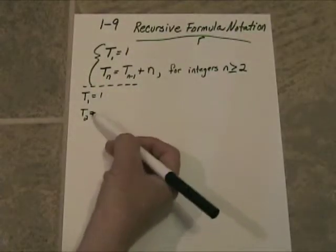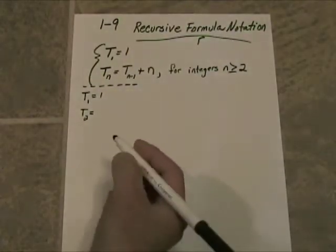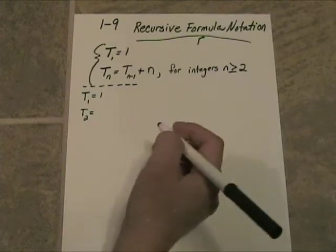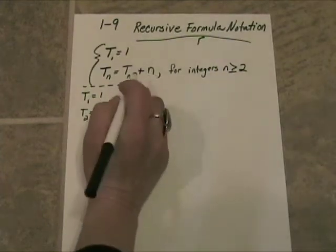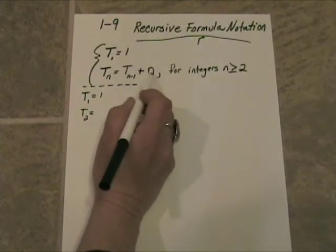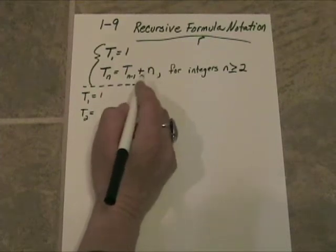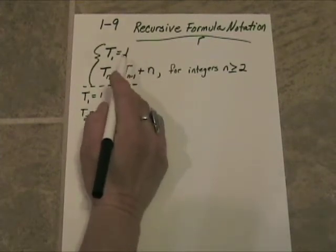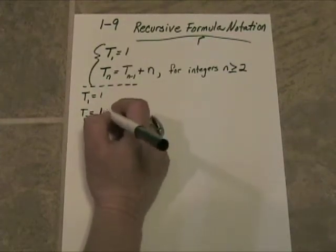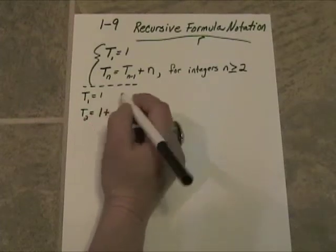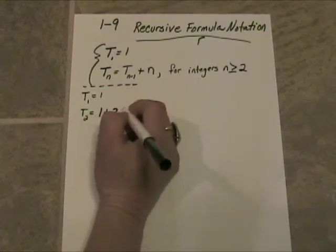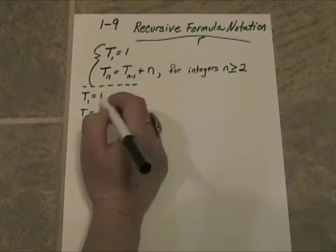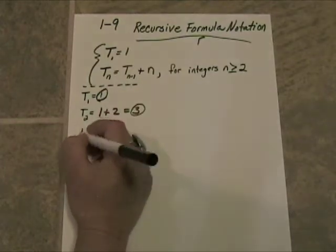Alright, so t sub 1 is 1. Now let's generate t sub 2. t sub 2 would be t sub 1 plus 2. Well, now t sub 1 is 1. And then if I take my n, which is 2, and add that, I'll get a value of 3. Let me go ahead and circle those values.